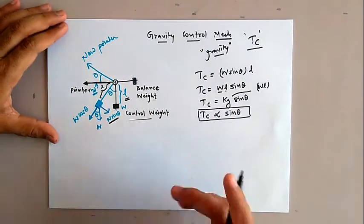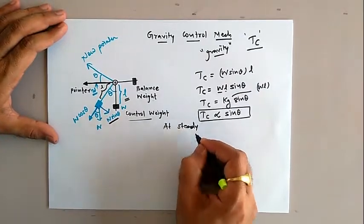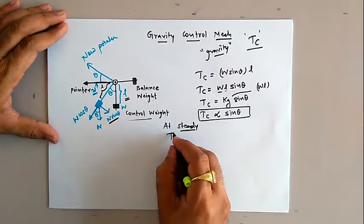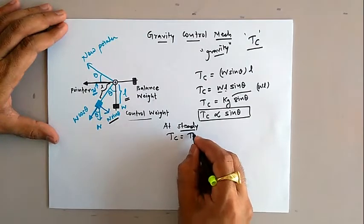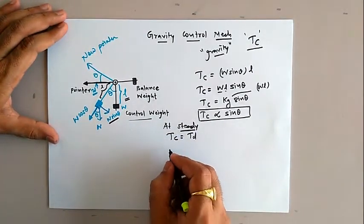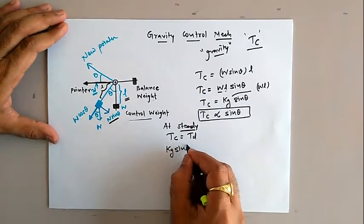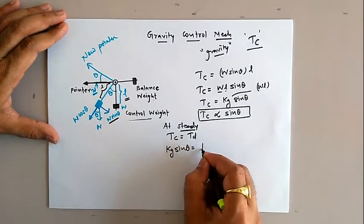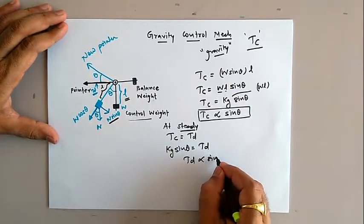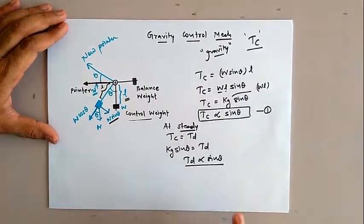At steady state or equilibrium condition, the controlling torque equals the deflection torque. So we can write Kg × sin θ = Td, or Td is proportional to sin theta. This is equation number 1 for gravity control.